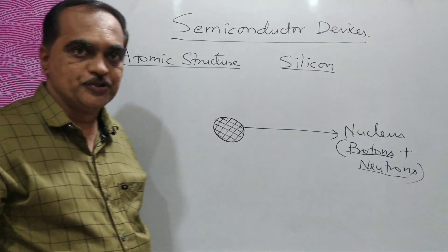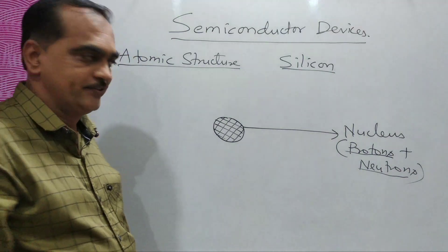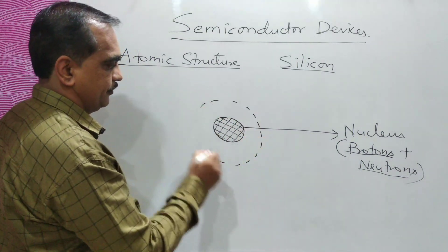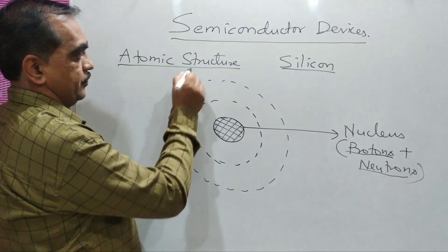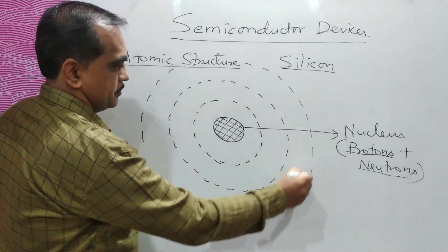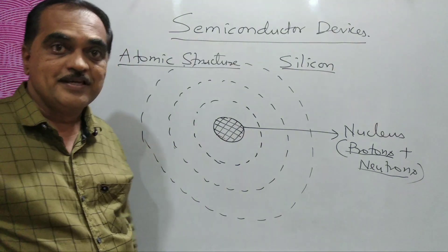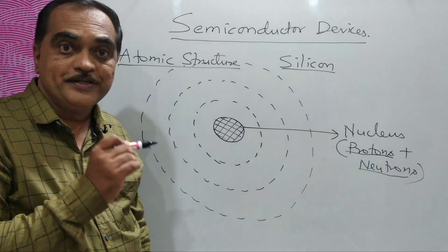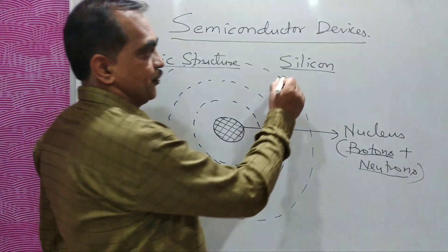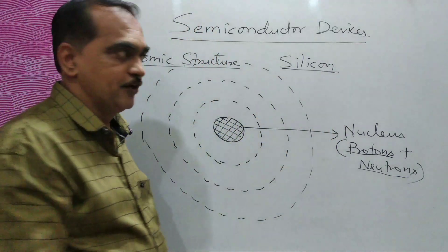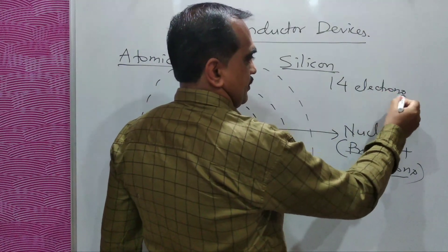Around the nucleus in an atomic structure, you will have orbits — first orbit, second orbit, third orbit. In these orbits, electrons will be revolving; they are negatively charged particles. If you see the silicon atomic structure, it has 14 electrons in total, distributed across these orbits.